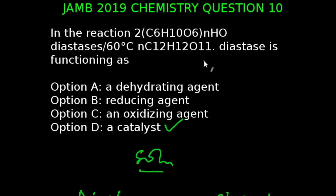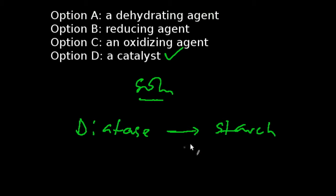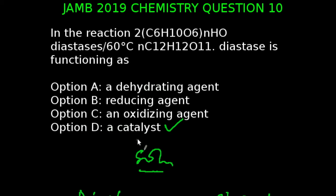We are looking at question 10 of the JAMB 2019 chemistry examination. The reaction we are looking at, diastase is implicated in this reaction. Diastase is an enzyme that breaks starch into small soluble sugars. And from residual knowledge, we know that enzymes are also catalytic in nature. So the correct answer to this question is catalyst. In this reaction, diastase acts as a catalyst.